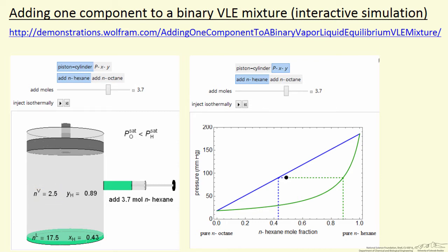This represents a piston and cylinder. The simulation allows you to add moles to the system at constant temperature and constant pressure. When you click the play button here, these moles will be injected into this piston and cylinder, and you have the option of either adding hexane or octane.